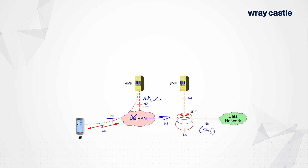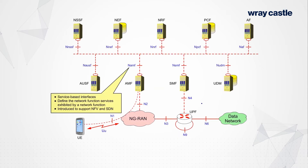There are occasions where we might interconnect or chain together multiple user plane functions, and in that case they are interconnected using the N9 user plane interface. The N4 interface is a control plane interface — it is a reference point, not a service-based interface. This uses the Packet Forwarding Control Protocol. So all of these are reference point interfaces. Now let's reveal the service-based part of the network.